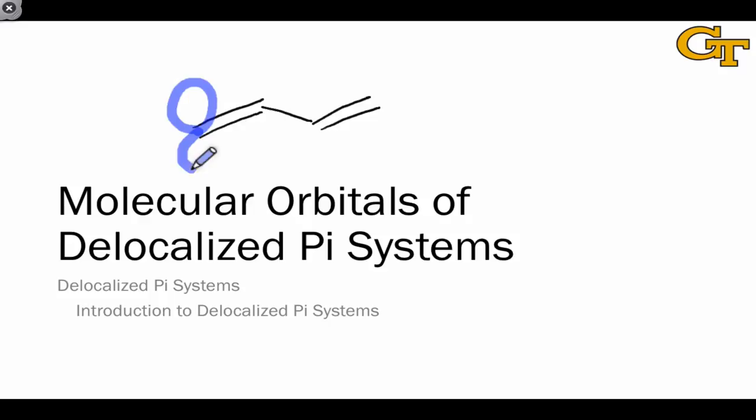For example, in a molecule like butadiene, we would expect the lowest energy pi molecular orbital of this molecule to consist of four p orbitals all overlapping in a constructive manner on all four atoms of the conjugated pi system.